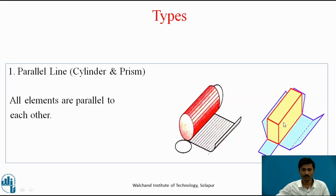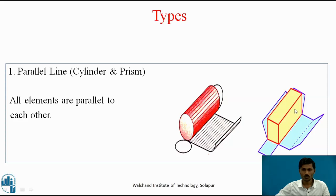Similarly, for the prism also, once we unroll all the vertical surfaces of a prism on the development plane, we get a plane figure as a rectangle having all the elements or vertical edges parallel to each other.